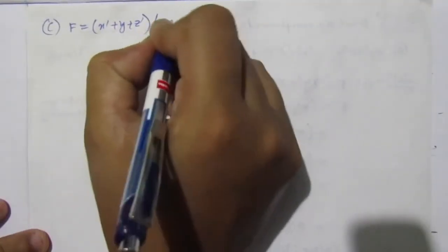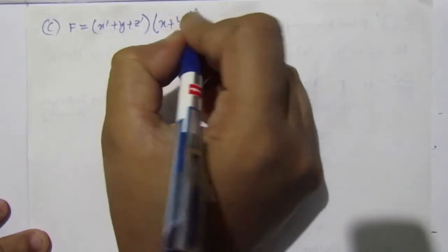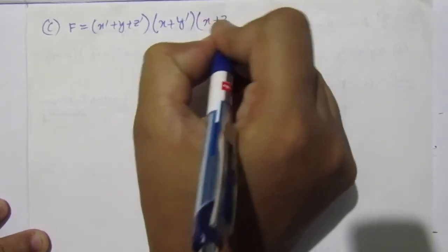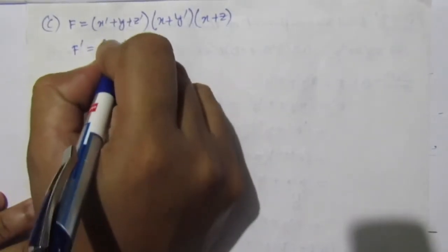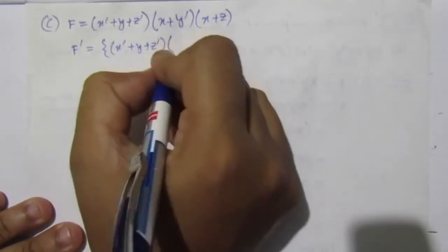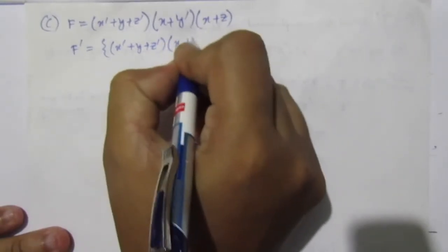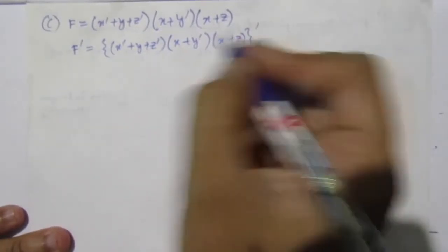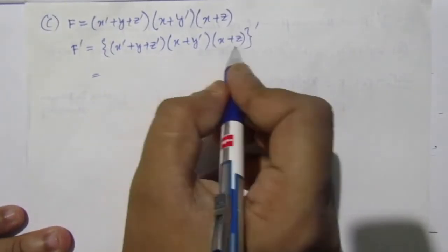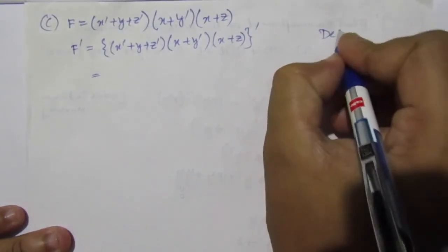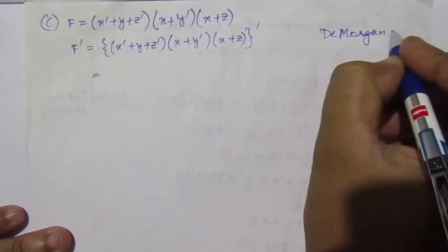Now let us go to the third part of the problem, C. F equals X̅ plus Y plus Z̅. We have to find the complement F̅. We can write X̅ plus Y plus Z̅ as a product using De Morgan: (X plus Y̅)(X plus Z̅). Considering this as A·B·C, whole bar, from De Morgan's theorem, A·B·C whole bar equals A̅ plus B̅ plus C̅.